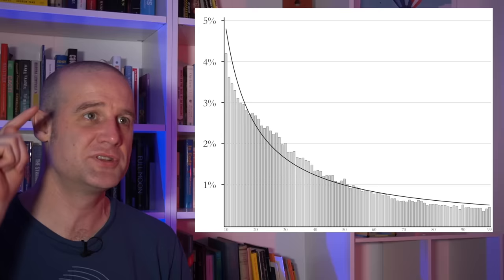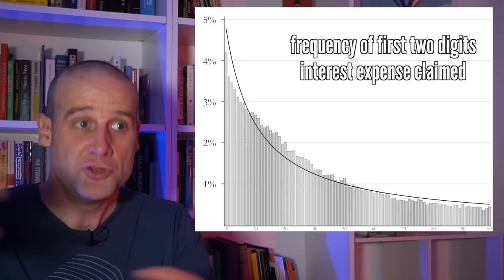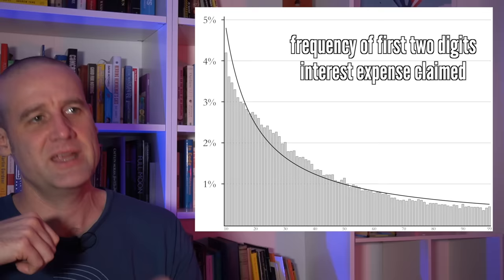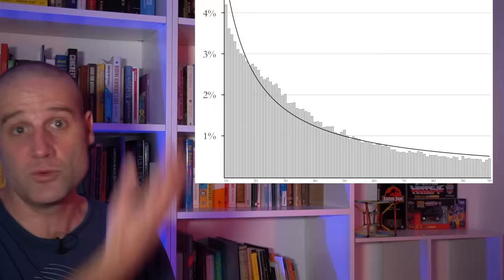Finally, we have people's interest expenses, not income, this is expenses. And you can see that the higher values are suppressed. And you think, well, hang on, this should follow Benford's Law. What's up with that? Well, it could be fraud, it could be people not stating their interest. But actually, it's better explained by people not bothering to claim the interest as an expense, if it wasn't a significant value. And so that's what causes this slight deviation from Benford's Law.